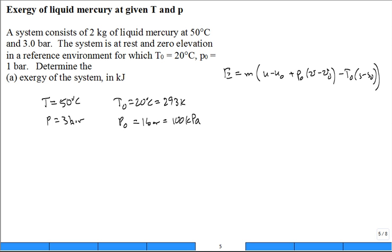So what do we know about liquid mercury? It's incompressible. So even though it's changing from 50 degrees C down to 20 degrees C, this term is zero in that calculation.